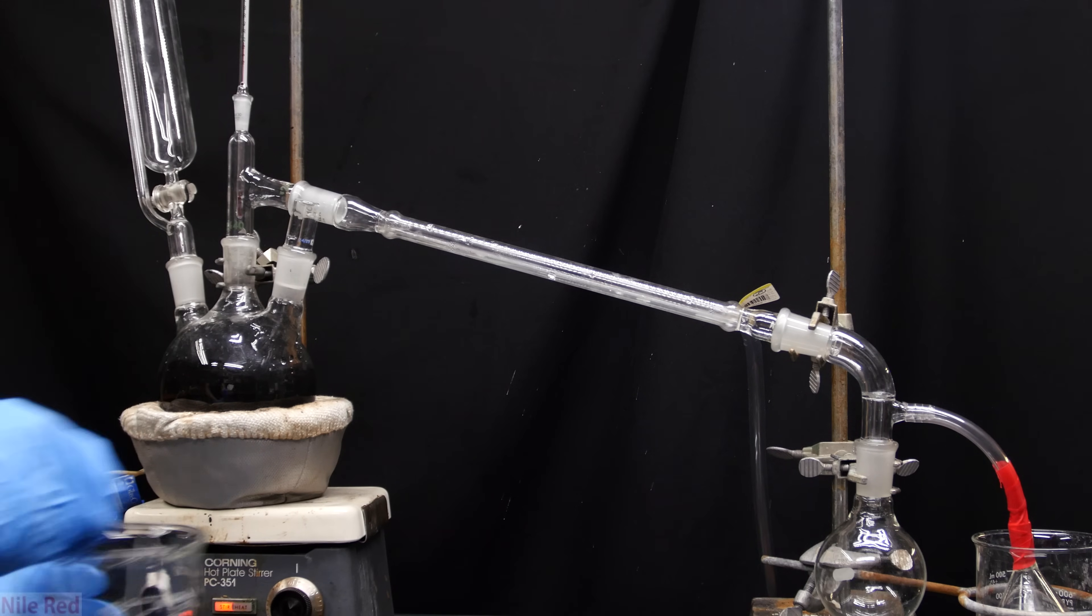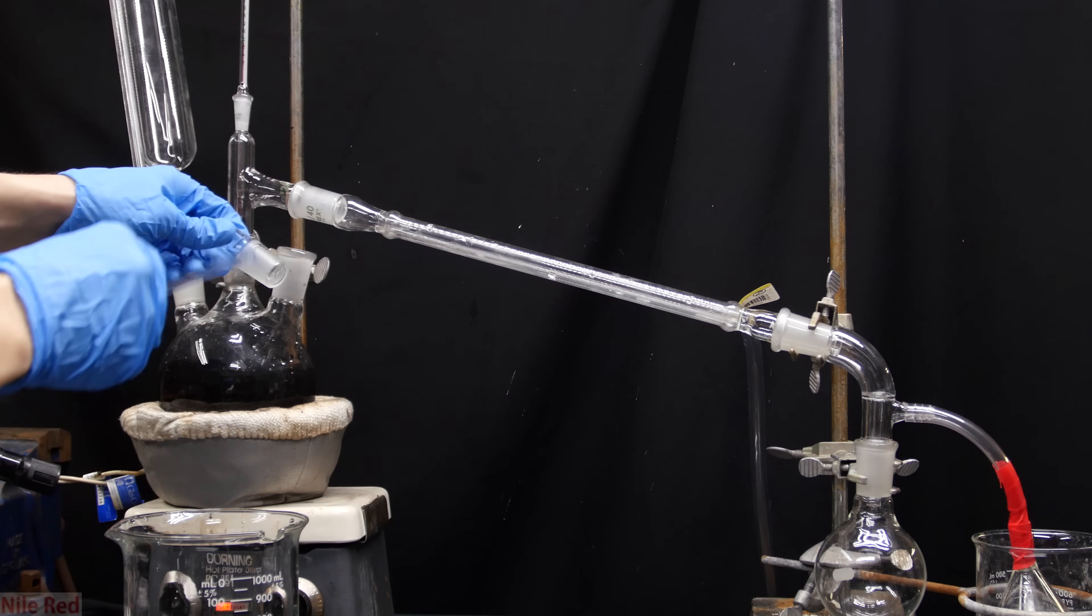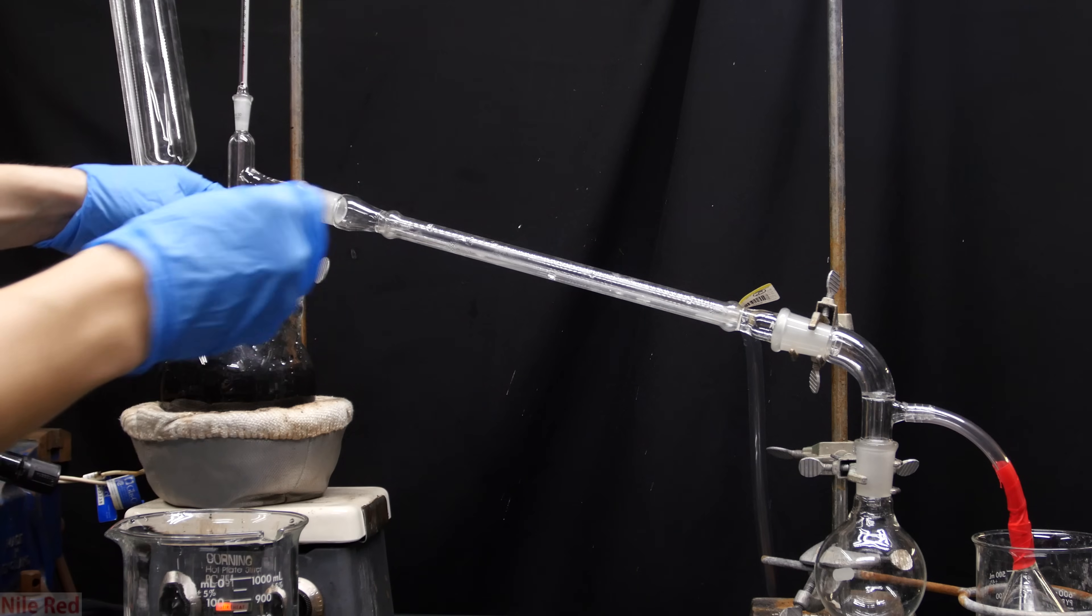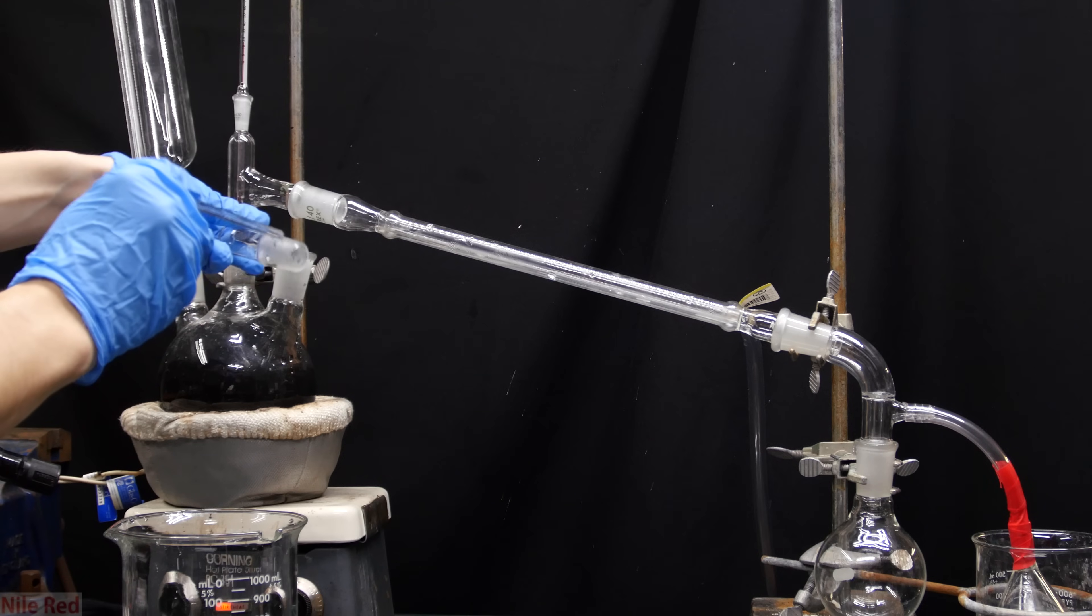You can see here the final setup of the simple distillation that we'll be carrying out, and I start lubricating all of the joints with a little bit of sulfuric acid. When making bromine, I think sulfuric acid is the best sealant to use for the joints.